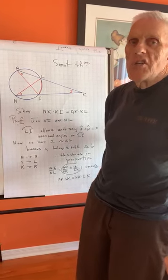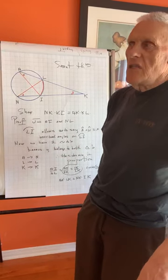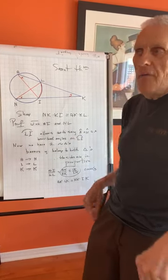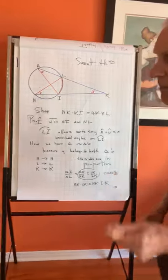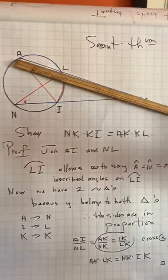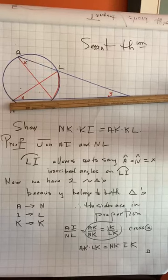We don't give much time to the circle, which is pretty interesting. It has a lot to offer us. Here's one example where I have a secant line AK and another secant line NK that meet here.